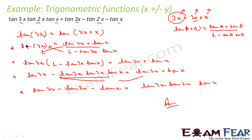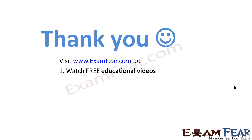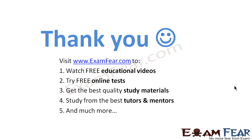We were asked to prove this identity, had no clue what to do, then thought to write tan 3x = tan(2x + x). We knew this formula has 3x, 2x, and x, so we expanded it and got the answer. Thank you — visit examfear.com to watch free educational videos, try free online tests, get the best quality study materials, and study from the best tutors and mentors. Thanks once again.